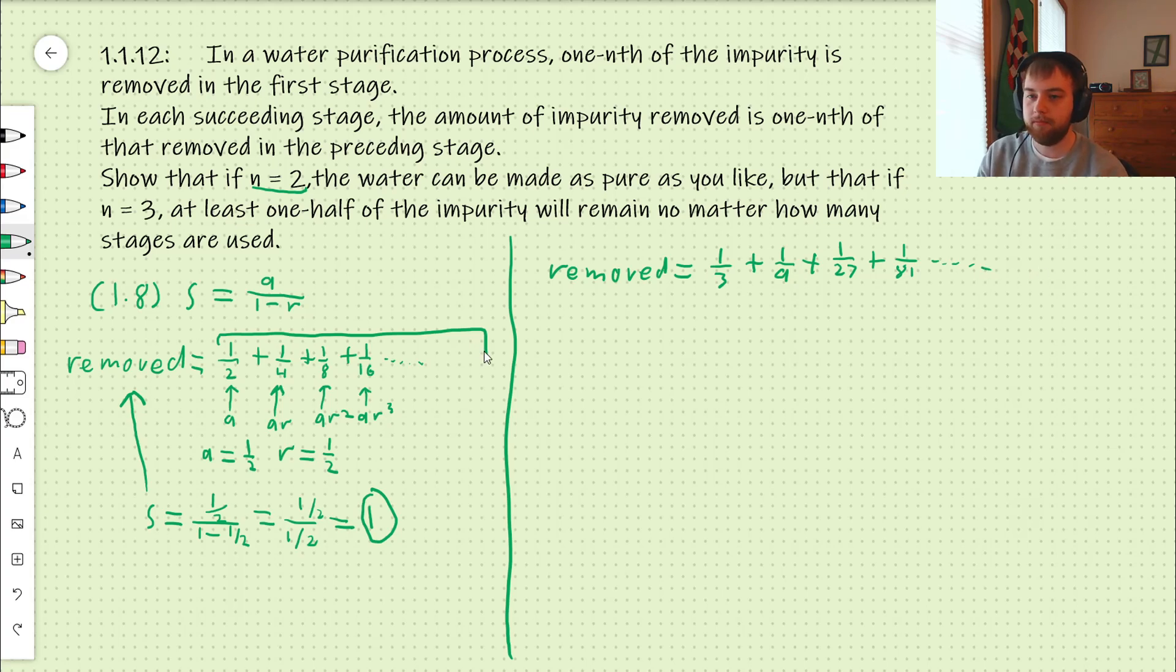So, actually, if you sum it up at each point, you get 1 third, 4 ninth, 13 27th, 40 81sts. You can see it's not quite...not quite getting there, you could say.